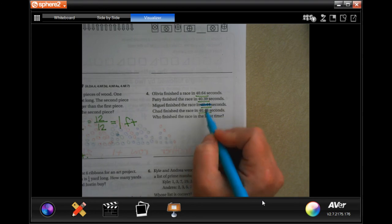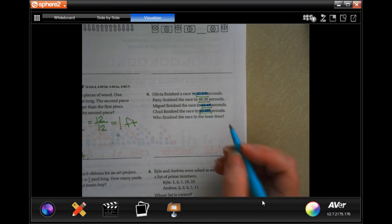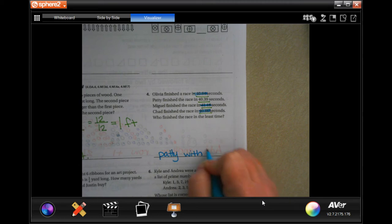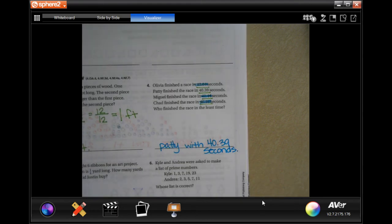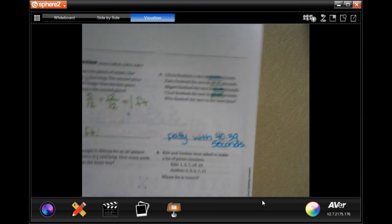Well, we have a 6, a 3, and a 4. Well, 6 is the highest number, and then between 3 and 4, 4 is the higher number. So, Patty with 40.39 seconds. You can just write Patty, that's fine.